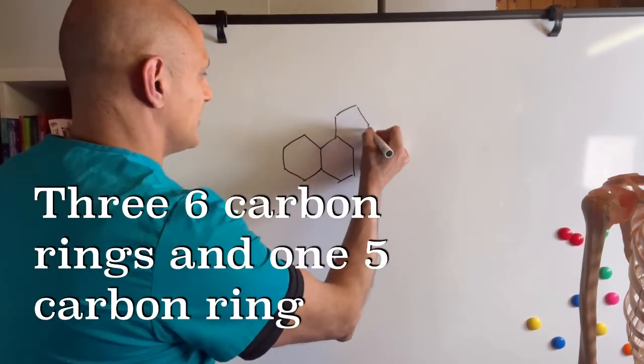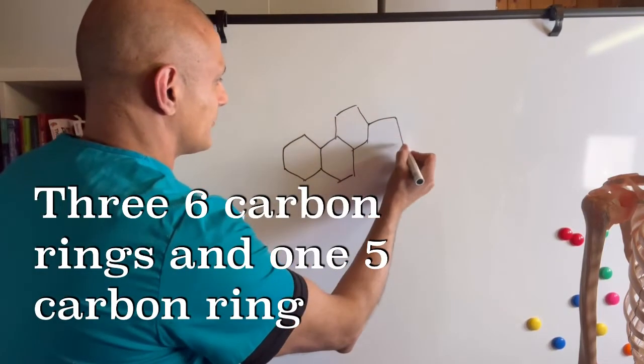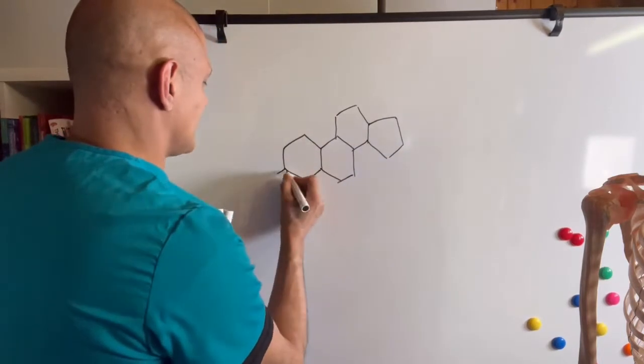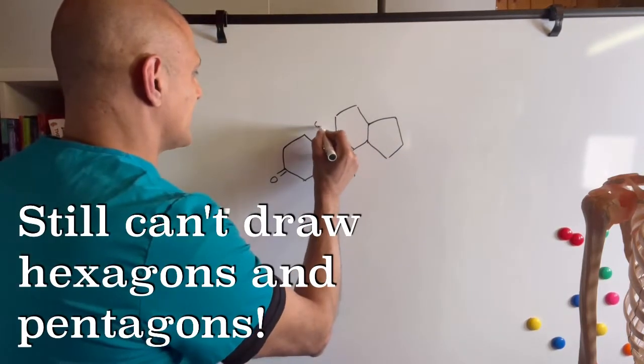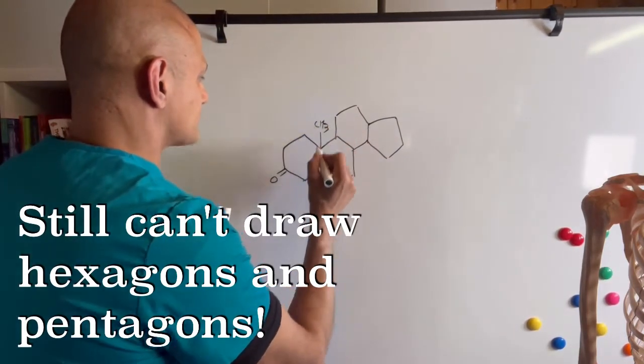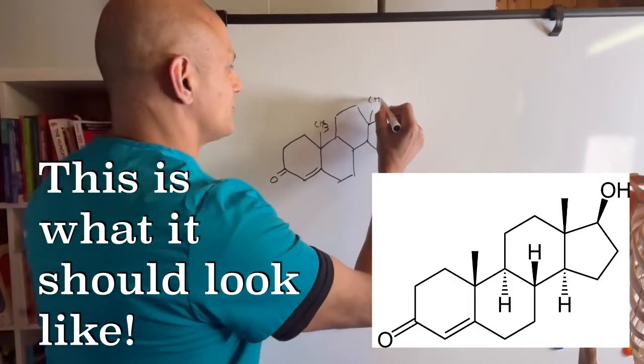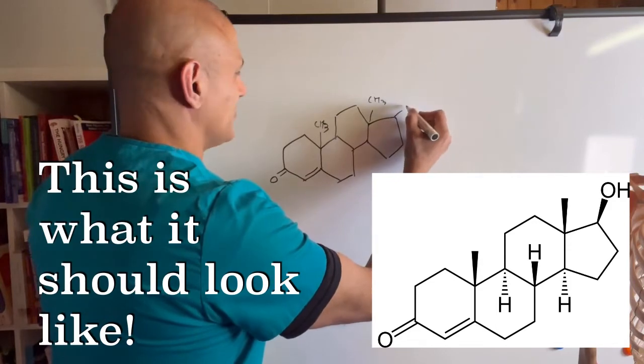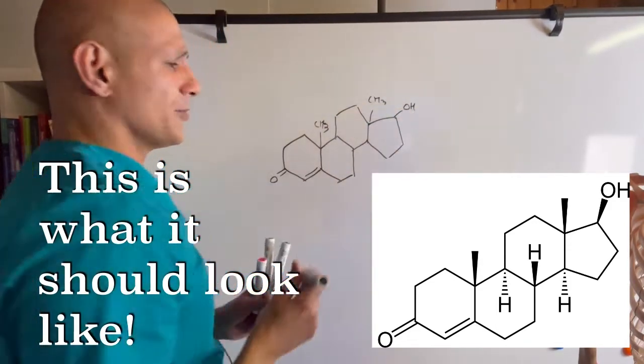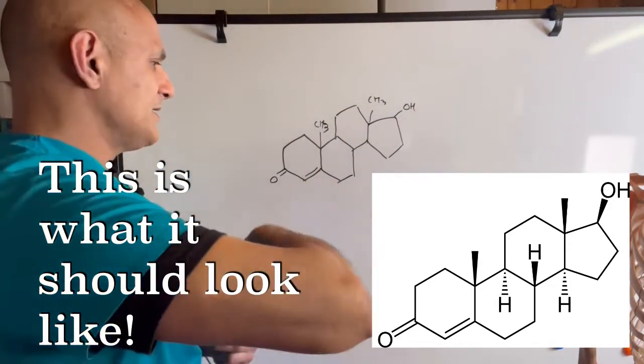Three six-carbon rings, and we get that double bond here, we get that methyl group, we get that double bond, we get another methyl group, and we get this hydroxyl group.